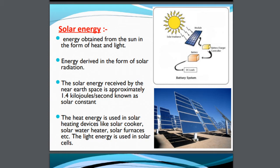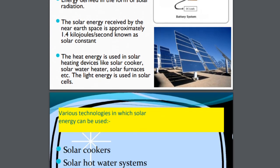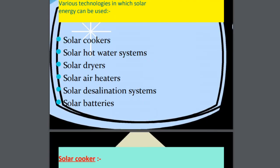You will study about the solar constant in higher classes. The heat energy is used not only for cooking, but also in many other devices like solar water heater systems, which are becoming very popular in our country, and solar furnaces where you need heat in the factories — it is also used to generate light. We can use solar power as solar cookers, solar hot water systems, solar dryers, solar air heaters, solar desalination systems where you remove salt, and solar batteries.